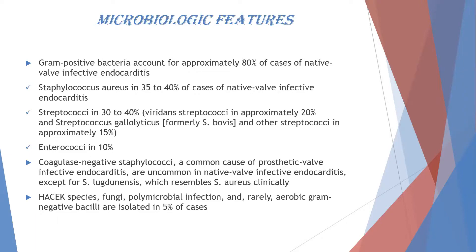Gram-positive bacteria account for approximately 80% of native valve endocarditis cases. Of these, Staphylococcus aureus comprises 35–40%, streptococci 30–40%, and enterococci about 10%. Coagulase-negative staphylococci are a common cause of prosthetic valve endocarditis but uncommon in native valve endocarditis, except for Staphylococcus lugdunensis, which clinically resembles S. aureus. Fungi, polymicrobial infection, and aerobic gram-negative bacilli are reported in about 5% of cases.